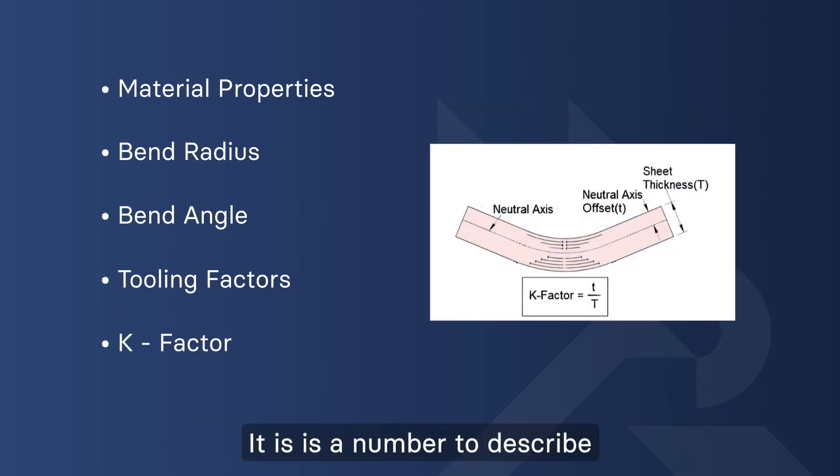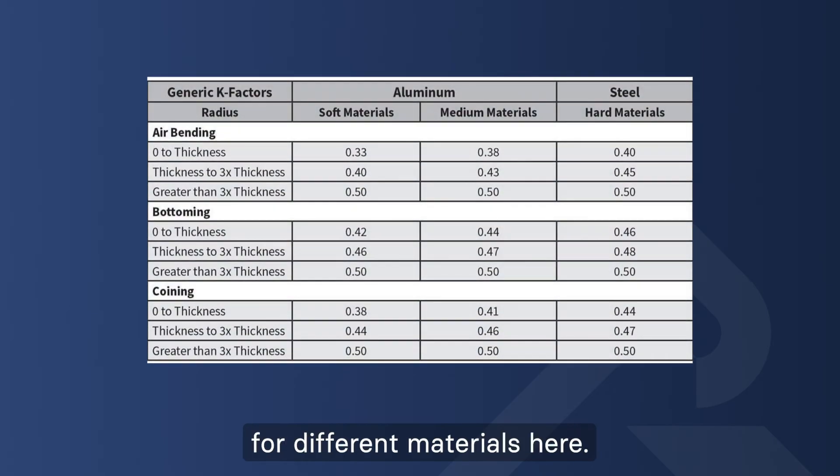K factor is a number to describe how far from the center the theoretical neutral axis moves when it's bent. You can find the K factor for different materials here.